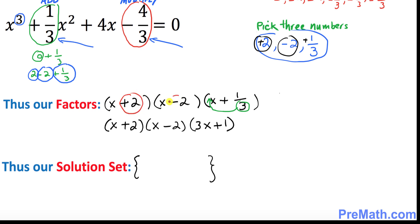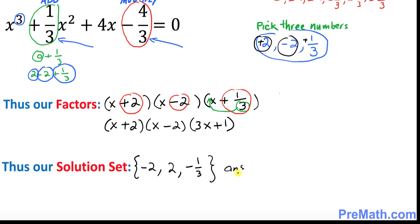Finally, our solution set is found by looking at these numbers — positive 2, positive 2, and positive 1 over 3 — and switching their signs. So the solutions are negative 2, positive 2, and negative 1 over 3. That is our answer.